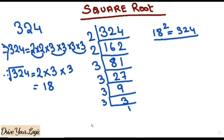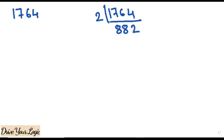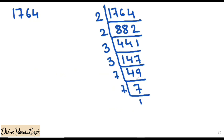Let's do a few more sums. The next number is 1764 — it's a big number. Since 4 is there, it will divide by 2. So 2 into 882, 2 into 441. It won't go with 2 again, so try 3: check divisibility — 4+4+1 = 9, yes. 3 into 147, 3 into 49. And 49 is 7 × 7.